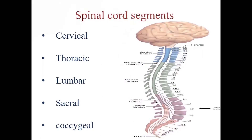Like the vertebral column, the spinal cord is divided into 5 segments: cervical, thoracic, lumbar, sacral, and coccygeal. Each segment provides several pairs of spinal nerves, which are 8 pairs of cervical nerves, 12 thoracic, 5 lumbar, 5 sacral, and 1 pair of coccygeal nerves.